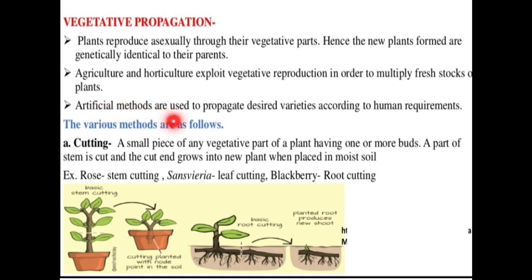It is an artificial method used to propagate the desired variety according to human requirement. Vegetative reproduction methods are used to grow plants as per requirement. There are three methods of vegetative reproduction: cutting, grafting, and tissue culture.